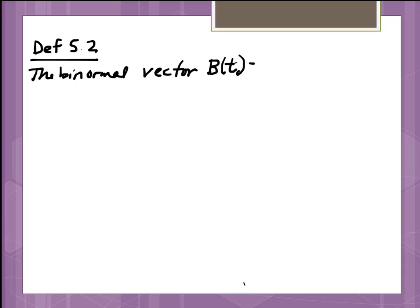All right, now, to get a third vector that's orthogonal both to T of t and N of t, we can actually define what's called a binormal vector, B of t. So that's what we're going to do next. This is definition 5.2. The binormal vector, B of t, is T of t cross product with N of t.